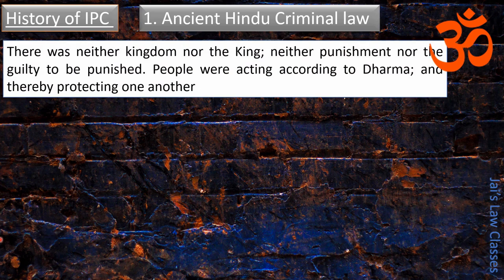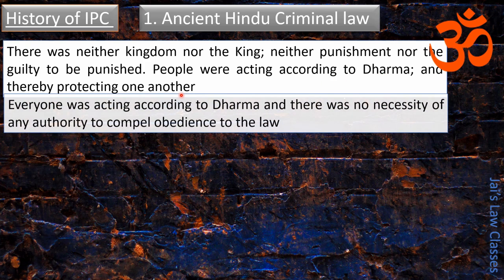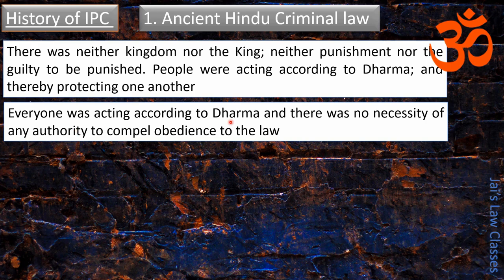Before the existence of any king or kingdom, there was neither punishment nor a guilty party to be punished. The people were acting according to dharma, thereby protecting one another. Everyone acted according to dharma and there was no necessity of any authority to compel obedience to the law — perhaps this is why people say there was Ram Rajya.